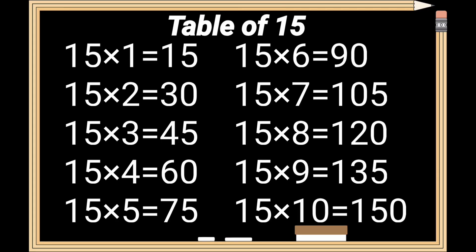Table of 15 review. 15 times 1 is 15. 15 times 2 is 30. 15 times 3 is 45. 15 times 4 is 60. 15 times 5 is 75. 15 times 6 is 90. 15 times 7 is 105. 15 times 8 is 120. 15 times 9 is 135. 15 times 10 is 150.